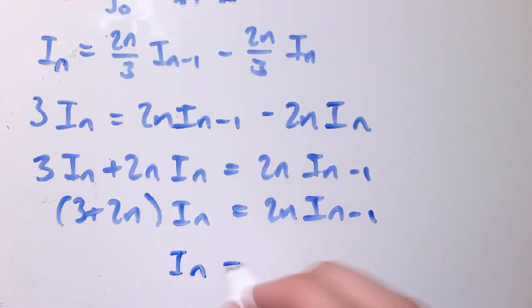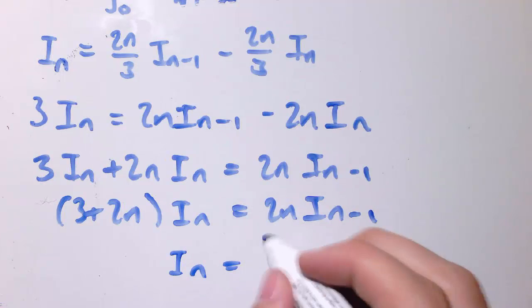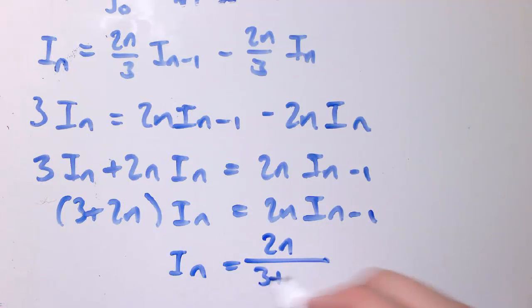And finally, then i n equals 2n over 3 plus 2n times i n minus 1. And we've got our nice reduction formula then, for i n in terms of i n minus 1.